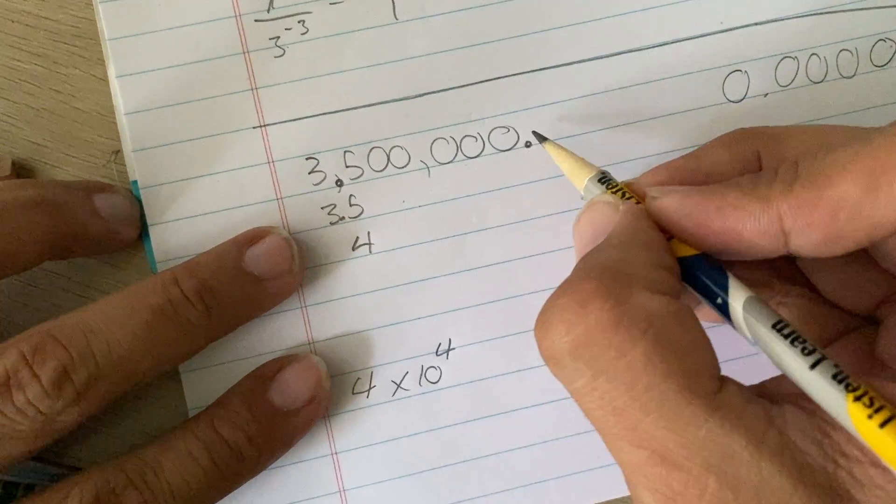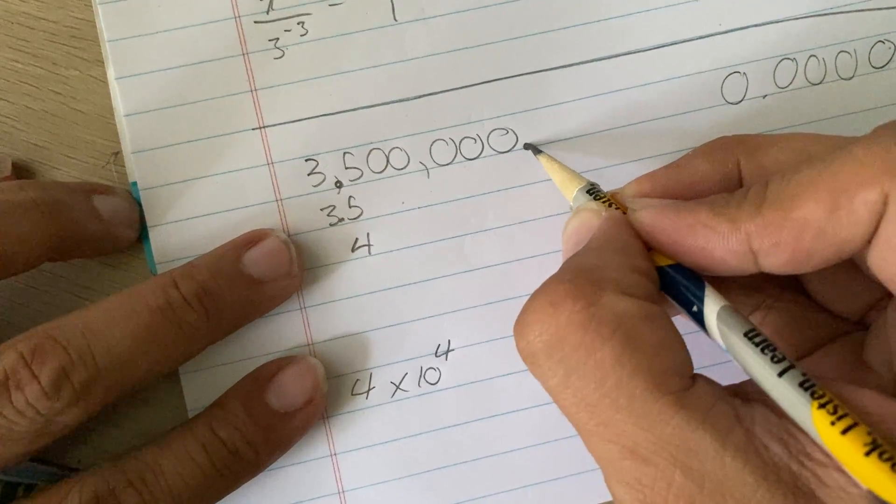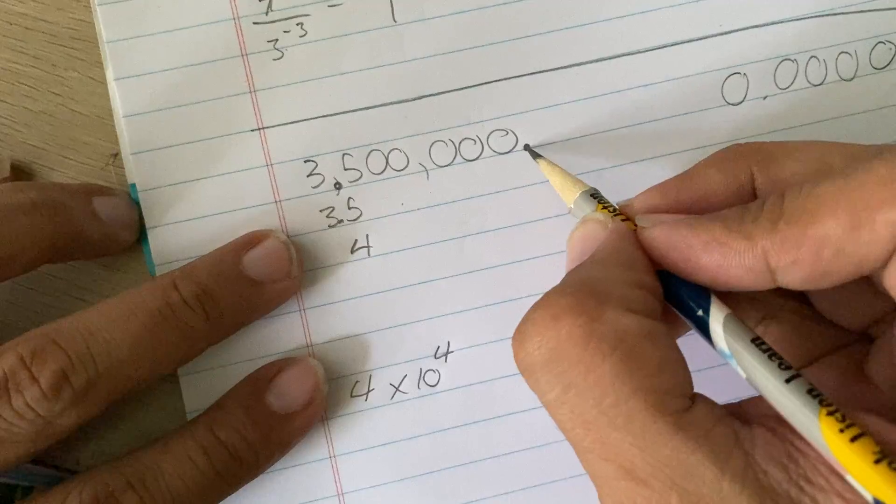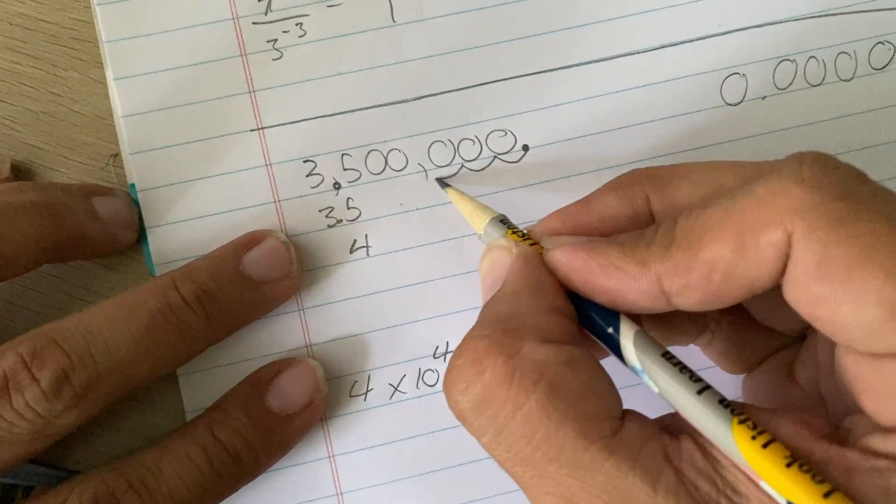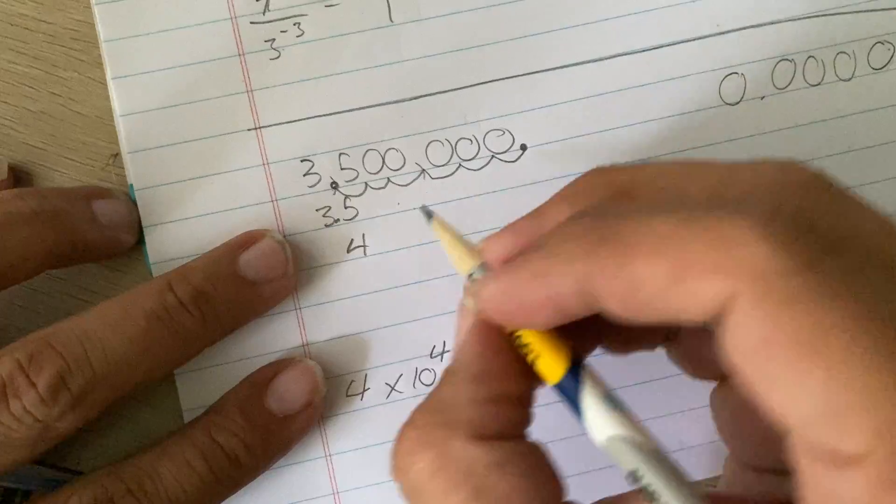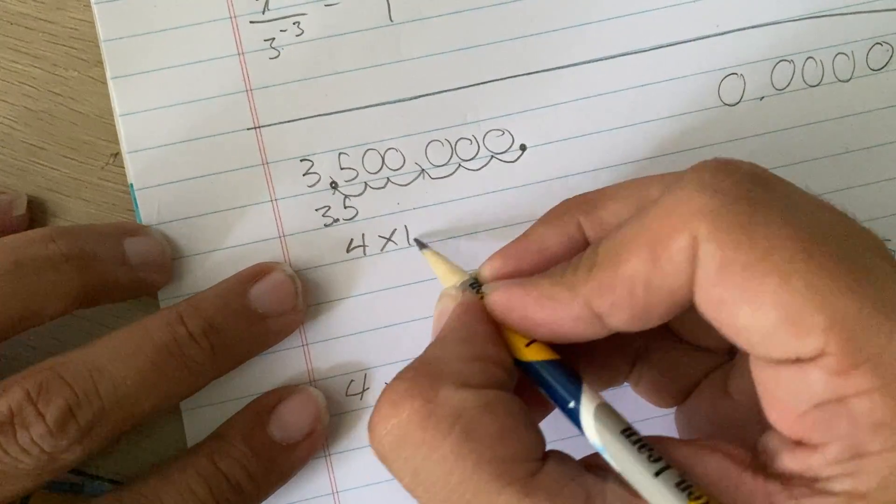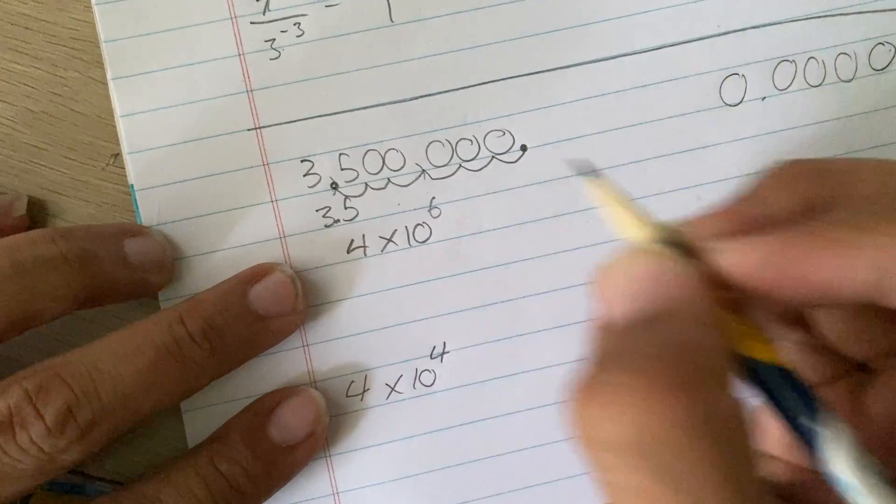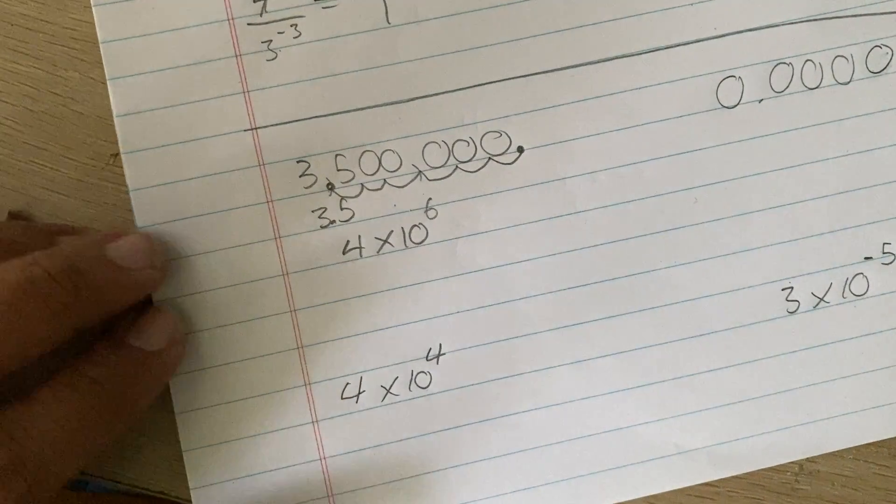Now, all I have to do is figure out how many times did I move the decimal point to get from here to there. We can count. 1, 2, 3, 4, 5, 6. So, now you write times 10 to the power of 6, because that's how many times you need to move the decimal point.